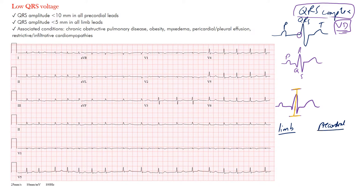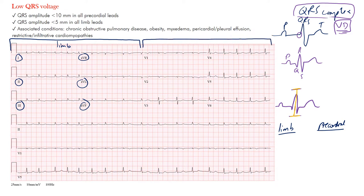Remember that the limb leads — leads I, II, III, AVR, AVL, and AVF — are on the left side of a standard 12-lead EKG. On the right side we have the precordial leads: V1, V2, V3, V4, V5, and V6. The voltage criteria for these are different in each group.